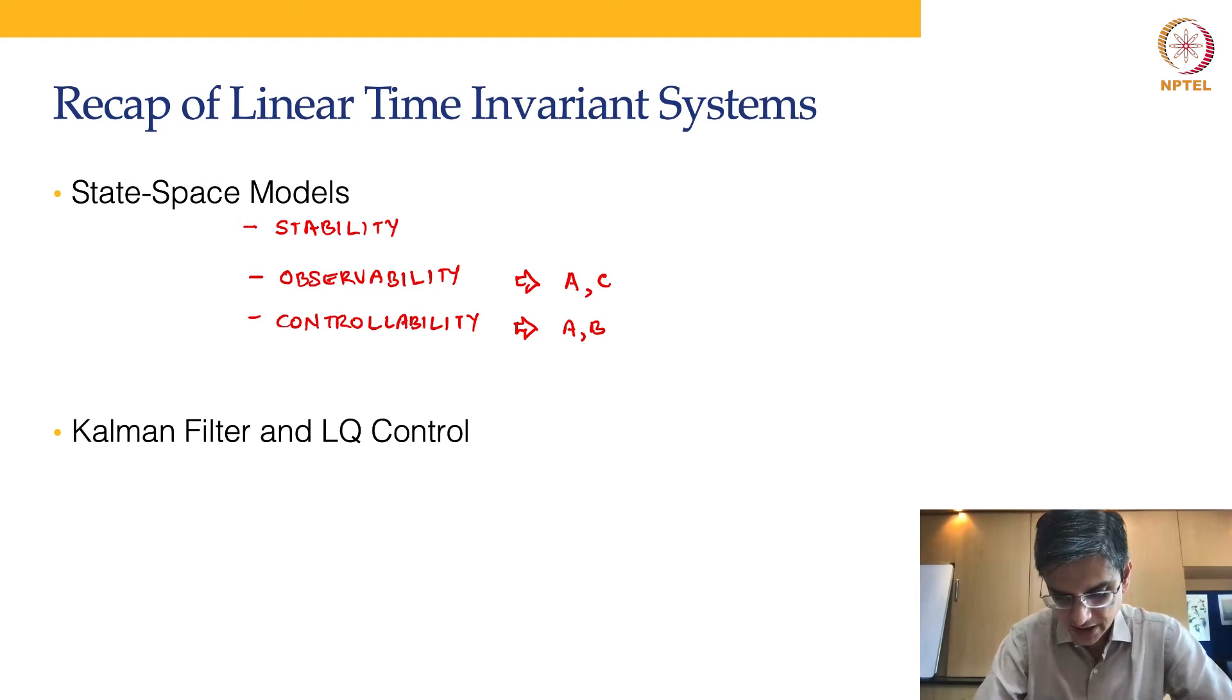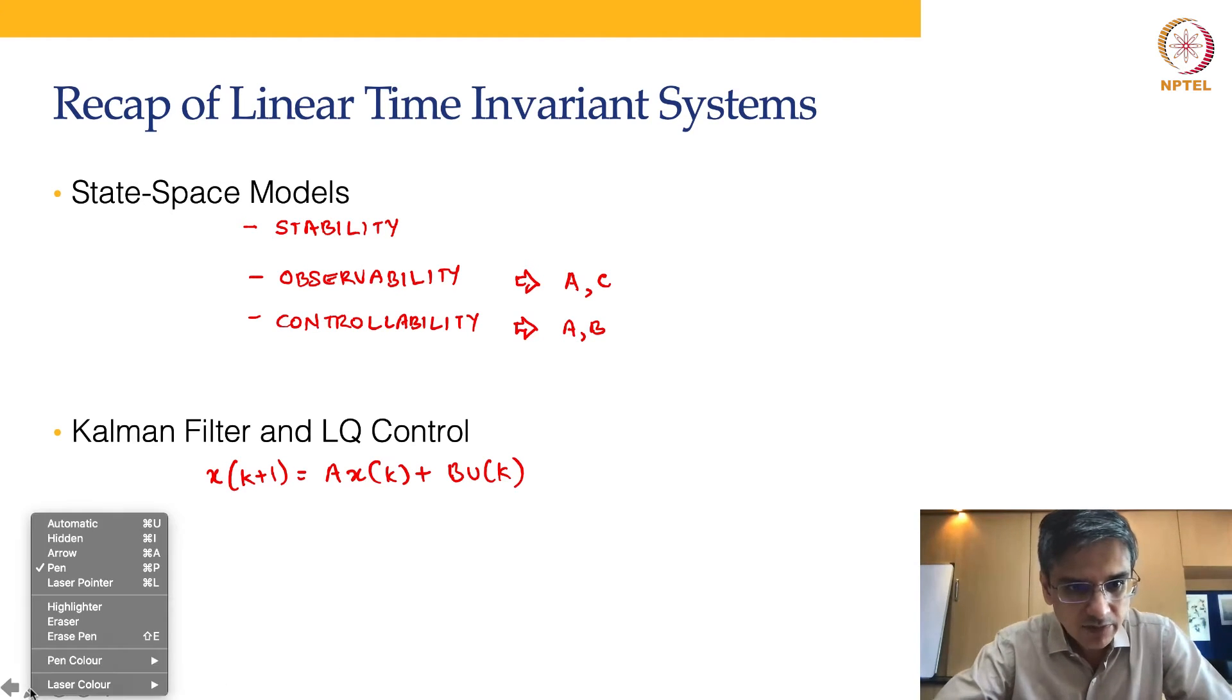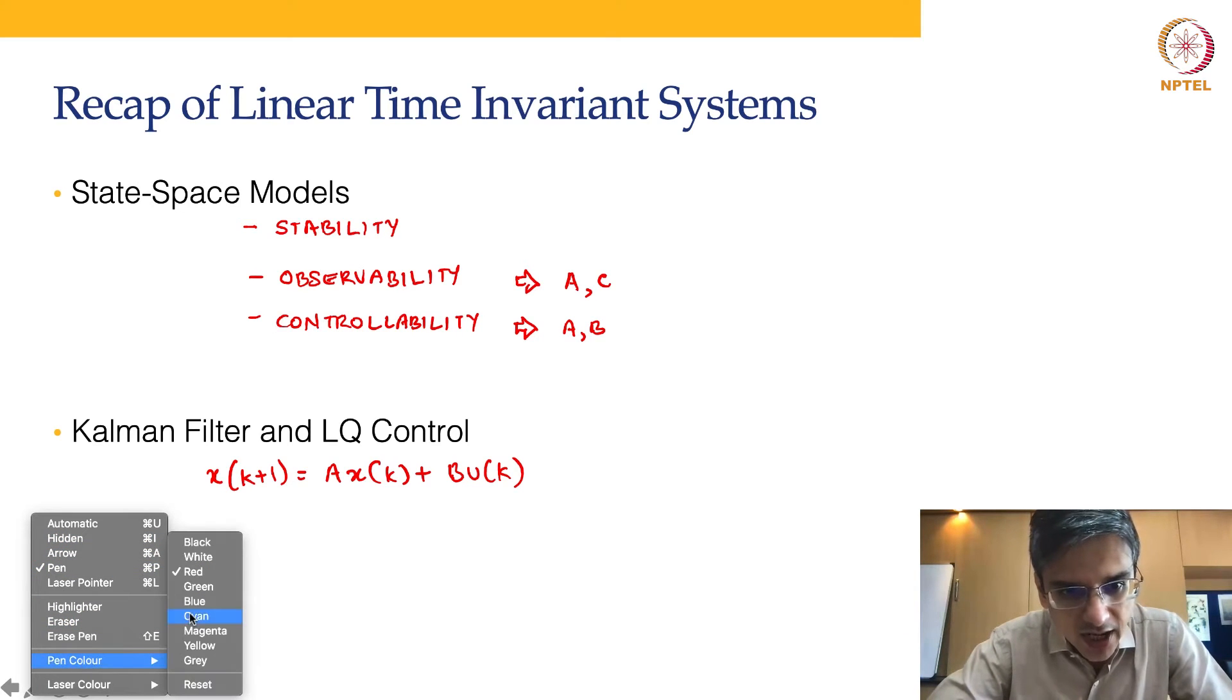Thereafter, we talked about LQR and Kalman filter. In LQR, we had a model of the type x(k+1) = A x(k) + B u(k), and we said that the information is known perfectly—there is no error in the model. We know all the information perfectly; we know the initial state perfectly, and the entire state is being measured. Based on these assumptions, the question we ask is: how can we do optimal linear control?